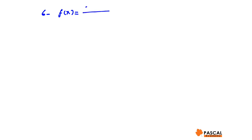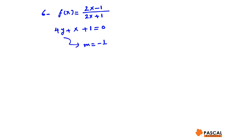Question number six: at what points on the graph of f of x equals 2x minus 1 divided by 2x plus 1 is the tangent line perpendicular to 4y plus x plus 1 equals 0? The slope of that line is negative 1 over 4, therefore the slope of a line perpendicular to the given line would be 4.